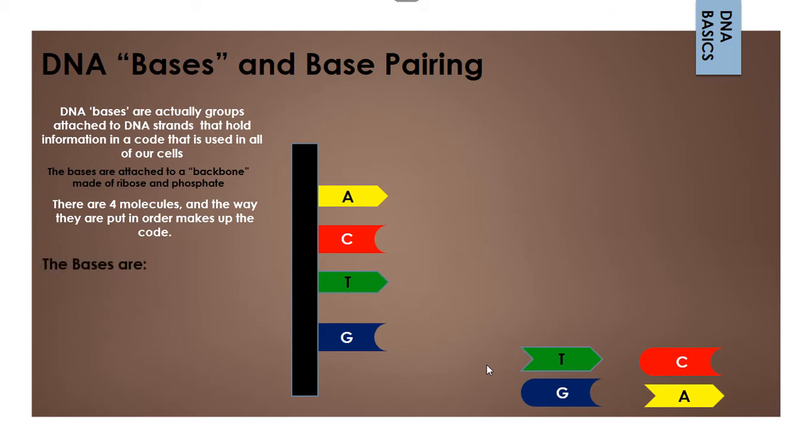The bases have names. They go by letters A, C, T, and G, but they are called adenine, cytosine, thymine, and guanine.